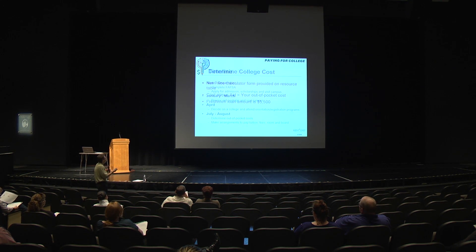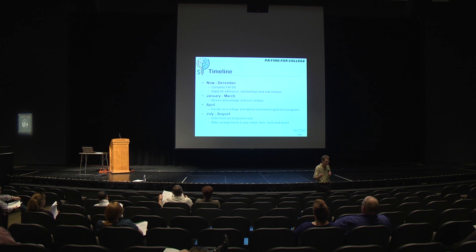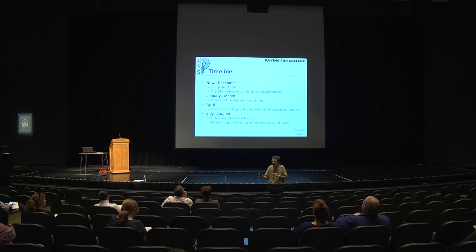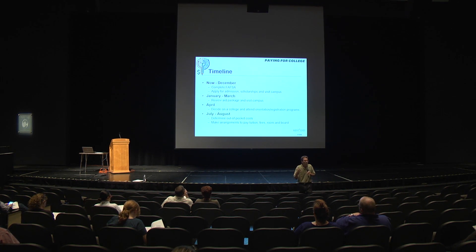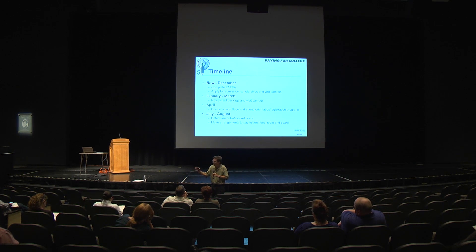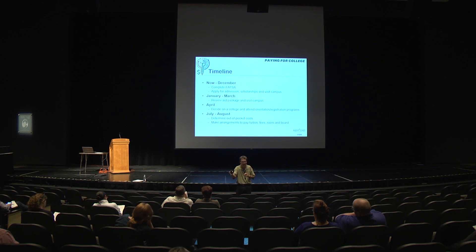Timeline: The FAFSA is now available, so get started. At Kent State, award letters are expected to go out in mid to late December. In April, you'll likely make your college decision. In summer, make sure everything is in place — if financial aid covers your bill, great; if not, consider a PLUS loan, alternative loan, or installment payment plan. Kent State offers installment payment plans that break costs into monthly payments.